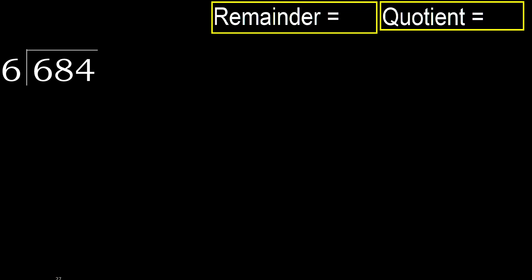684 divided by 6. 6 is not less, therefore start with 6. 6 multiplied by which number is nearest to 6, but not greater? 6 multiplied by 2 is 12 — 12 is greater. Multiply by 1: 6 is not greater.